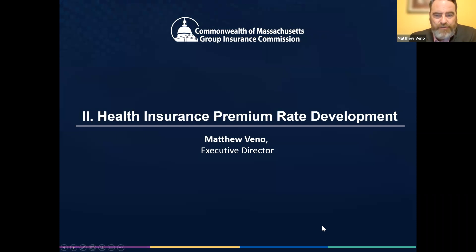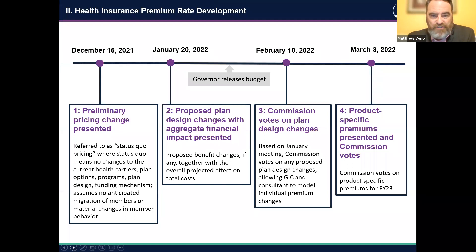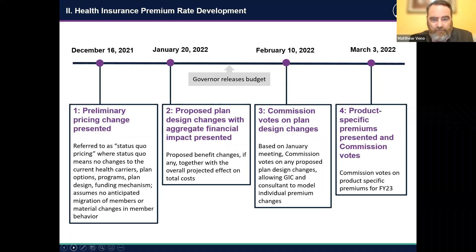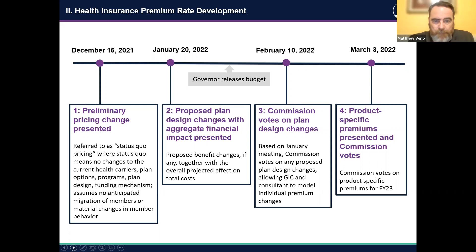Next we'll dive into the health insurance premium rate development. This is the timeline we use every year when we develop rates. We had our initial discussion with our commission about preliminary rates at our December 16th meeting, followed by a meeting last week where we presented the proposed plan design changes and their financial impact. Both of these meetings are available on the GIC's YouTube page. At our next commission meeting on February 10th, the commission will vote on the proposed plan design changes, and then finally vote on your insurance premiums at their March 3rd meeting.